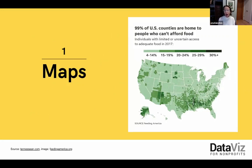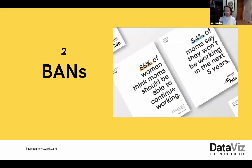Number one is maps. If the map shows a geography we already know — like the U.S., or your own city — we have a lot of prior knowledge that we can apply. This makes maps easy to digest on the fly. We look for our own location, compare east to west, cities to rural areas. Consider showing the distribution of the need you are addressing, the location of your clientele, or where you're providing services.